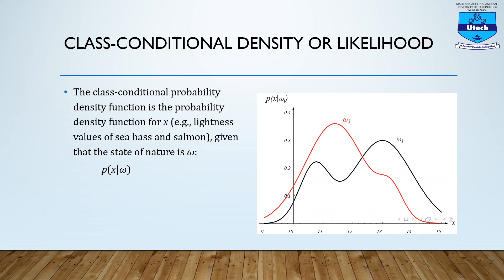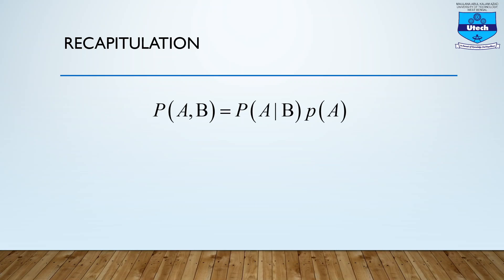If you draw the picture, it could be something like this: along the x-axis there will be the feature value, and along the y-axis it is the probability of that feature given that particular W_i. That is the thing, and the curve can look something like that — that is the likelihood.